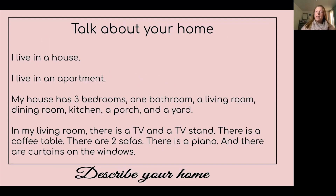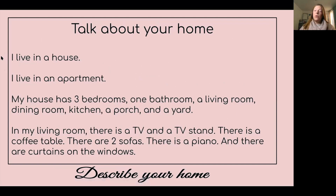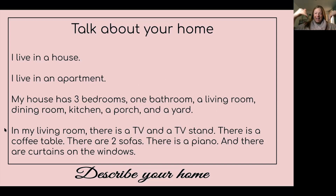To talk about your home, use the verb 'live' to say I live in a house or I live in an apartment. Then describe your house: my house has three bedrooms, one bathroom, a living room, dining room, kitchen, a porch, and a yard. To describe things inside a particular room, use 'there is' or 'there are.' In my living room, there is a TV and a TV stand, there is a coffee table, there are two sofas, there is a piano, and there are curtains on the windows.